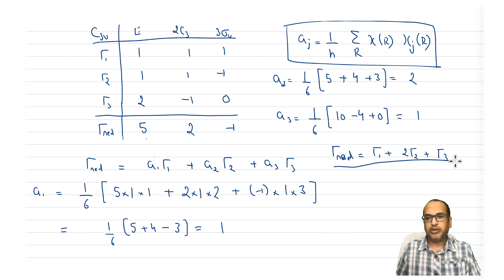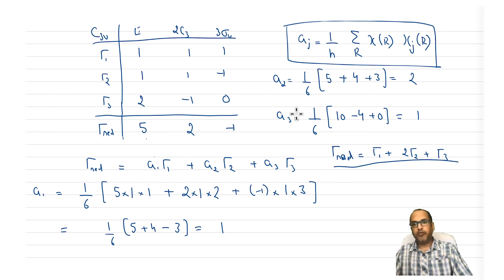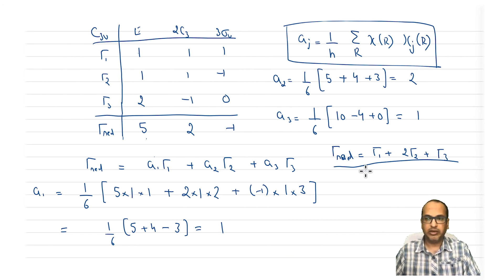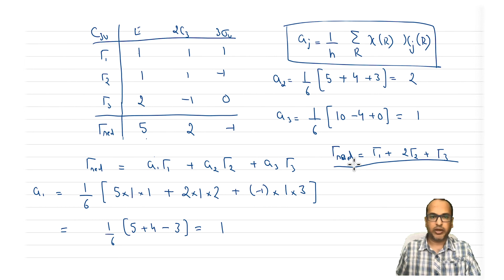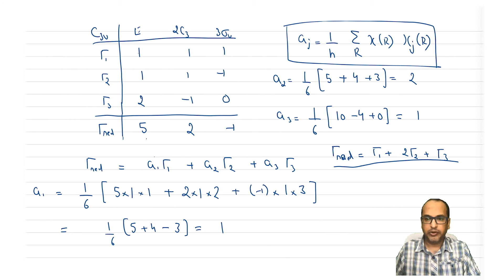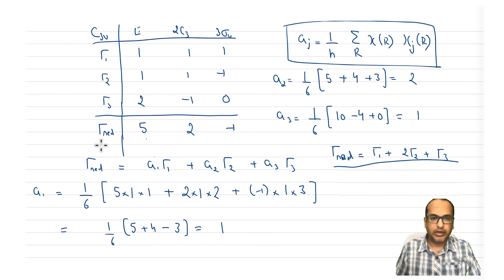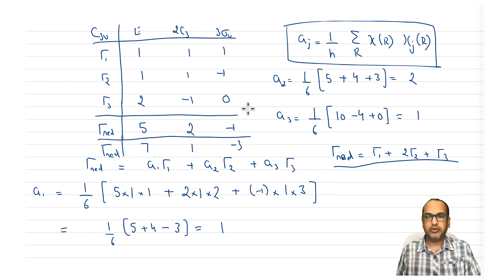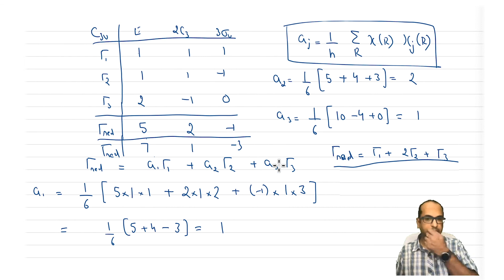This is a very important result — we are now able to write any given reducible representation as a linear combination of irreducible representations. For the home assignment, try to reduce another tau_reducible with characters (7, 1, -3) for the C3V point group and find the linear combination of tau1, tau2, tau3.